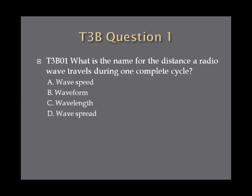Question 1. What is the name for the distance a radio wave travels during one complete cycle? A, wave speed. B, wave form. C, wave length. Or D, wave spread?